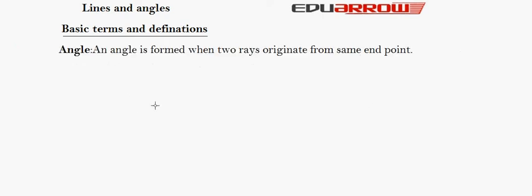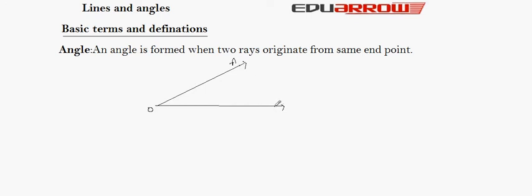Angle: An angle is formed when two rays originate from the same endpoint, say O. Here, OA and OB, which are forming the angle AOB, are called the arms of the angle. OA and OB are called the arms of the angle and O is called the vertex of the angle.